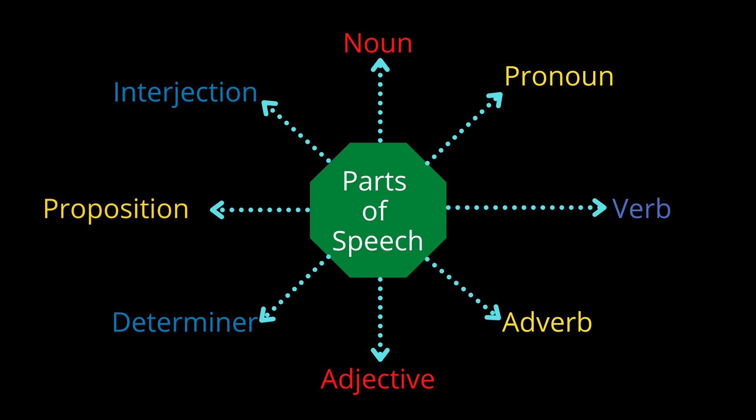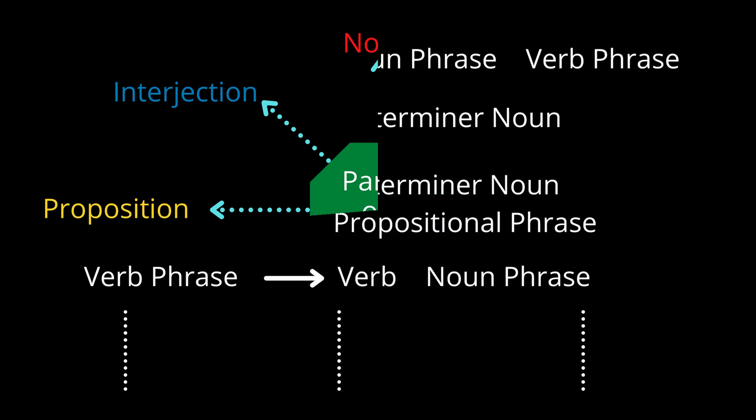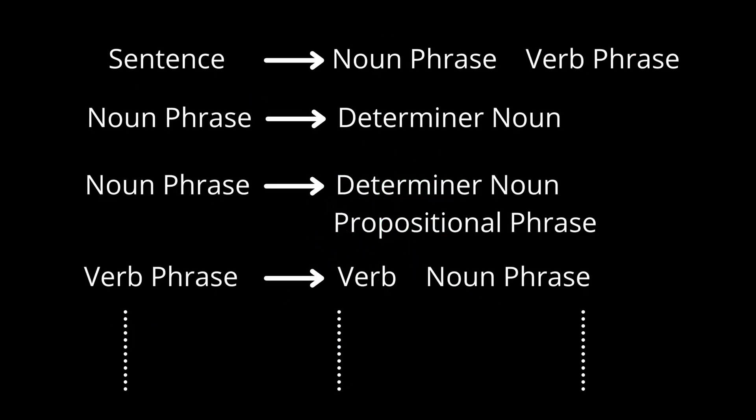Some examples of grammatical rules are as follows: a sentence can be made of a noun phrase and a verb phrase; a noun phrase can be made of a determinant and a noun; a noun phrase can be made of a preposition; a verb phrase can be made of a verb and a noun phrase. You can continue making rules like this for a language. Let us now see sentence parsing with the help of software.